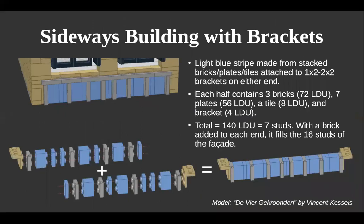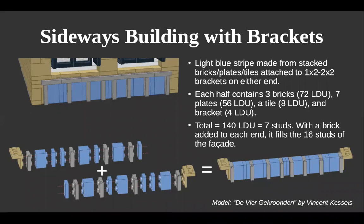The first technique is the panel across the front. The medium blue pieces are all bricks and plates mounted sideways, and the gray pieces are a plate with rail. You can see in the exploded diagram that they're attached to a bracket piece, with various plates, bricks, and a tile at the end. Building those two sections facing each other, the total LDU adds up to seven studs. The half-plate from the bracket plus all those plates and bricks and the tile equals seven studs, and the building is 16 studs wide — two of those sections plus a brick on each end makes 16.